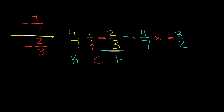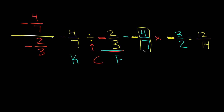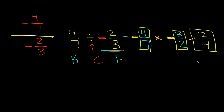Hide the negative signs for a second — don't get rid of them, just hide them. What is 4 times 3? That's 12. On the bottom, 7 times 2 is 14. Now bring the negative signs back: we have a negative number times a negative number. A negative times a negative is a positive. So the answer is positive 12 over 14.